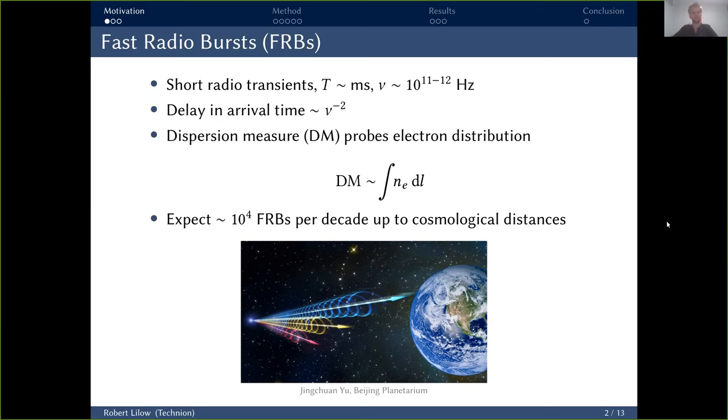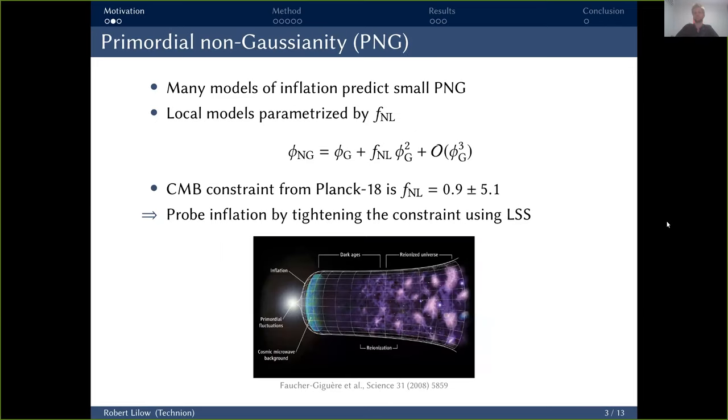Now at the time, there are only a few more than 100 FRBs detected. However, given the characteristics of current as well as upcoming radio surveys, there's an expected number of the order of 10,000 even a few 10,000 FRBs to be observed per decade, and that up to very large cosmologically relevant distances. Now, I would like to show you how you can use those to constrain primordial non-Gaussianity. As most of you probably know, the simplest model of inflation predicts that the primordial potential fluctuations right after inflation are Gaussian.